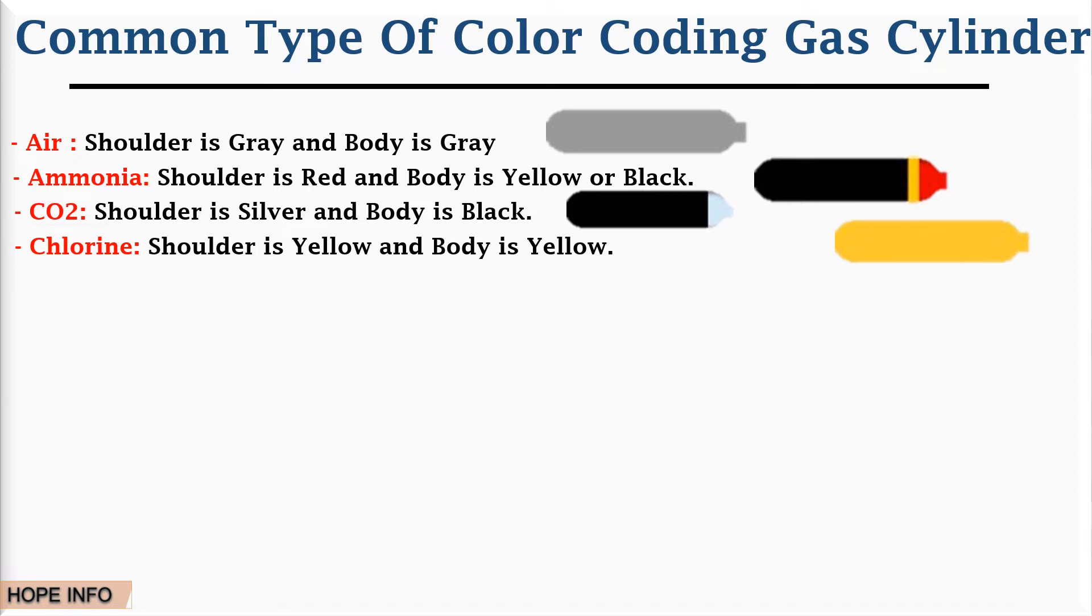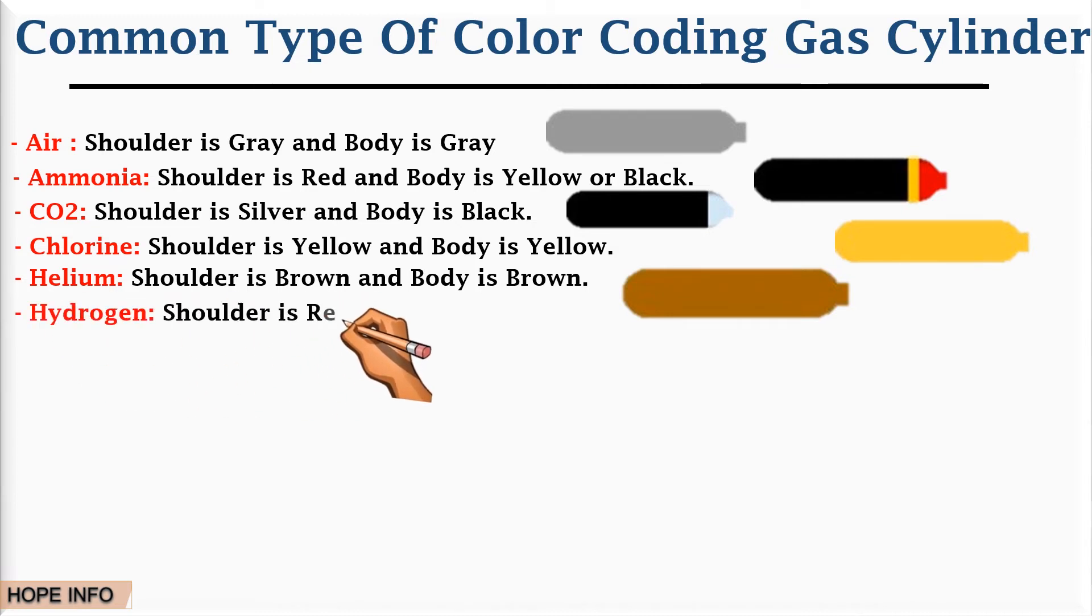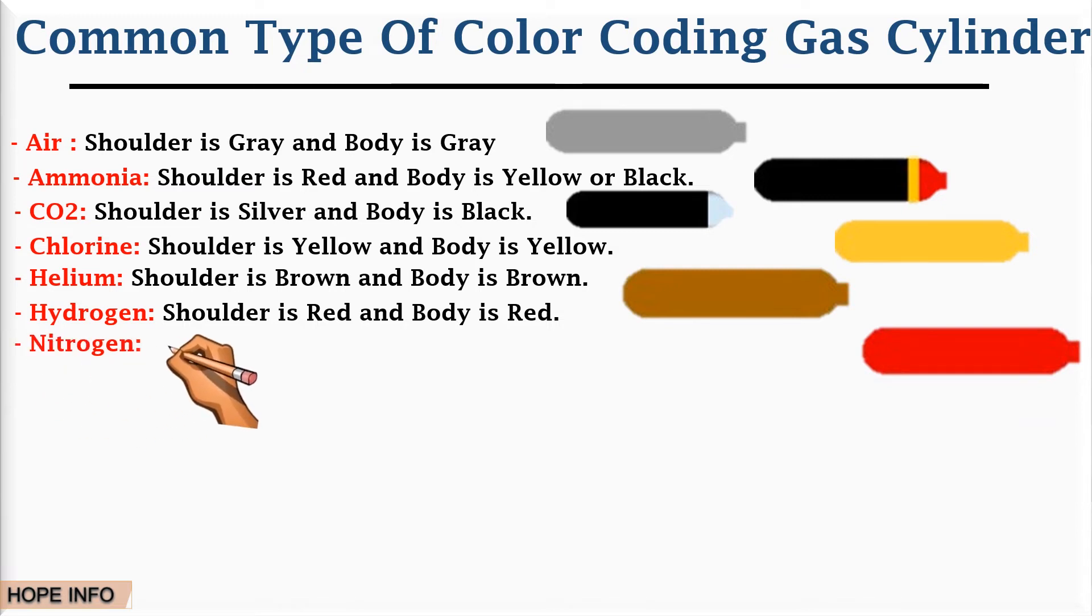Number five is helium - the shoulder is brown and body is brown. Number six is hydrogen - the shoulder is red and body is red. Number seven is nitrogen - the shoulder is black and body is black.